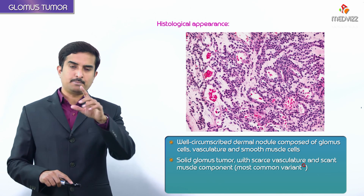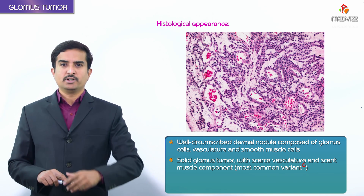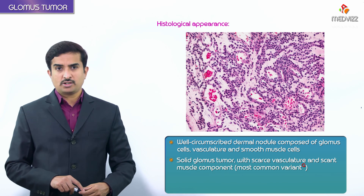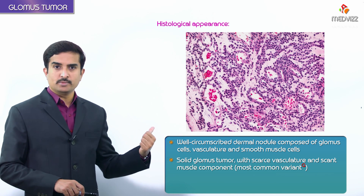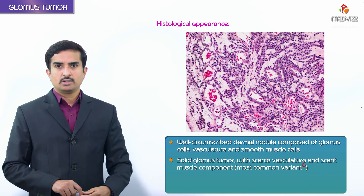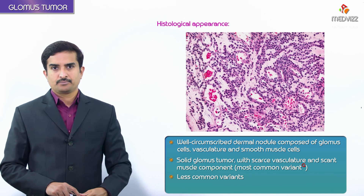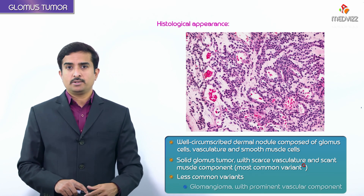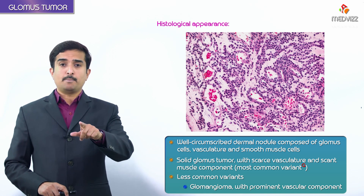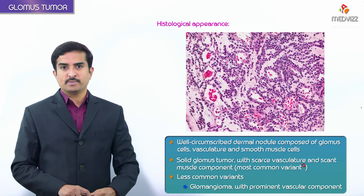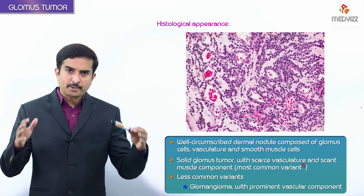There are different types of glomus tumors. The solid glomus tumor has scarce vasculature and a scant muscle component, and it is the most common variant. A less common variant is glomangioma, which has a prominent vascular component — the vascular component is less prominent in solid tumors compared to glomangiomas.